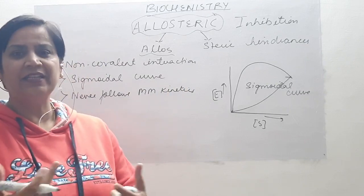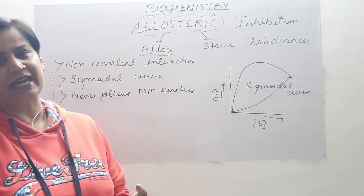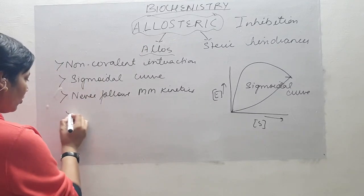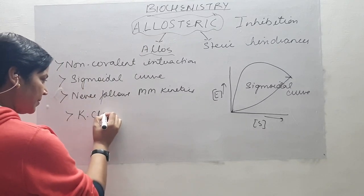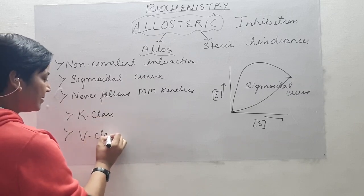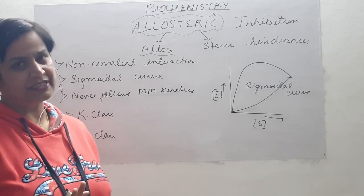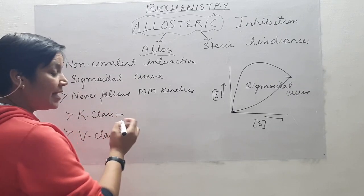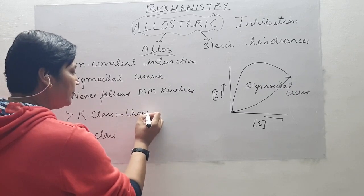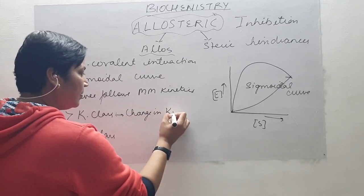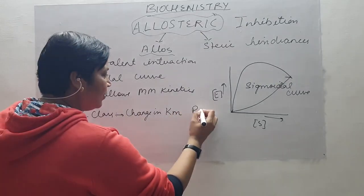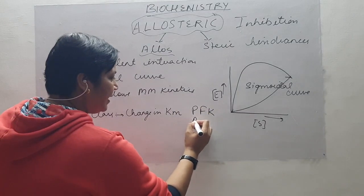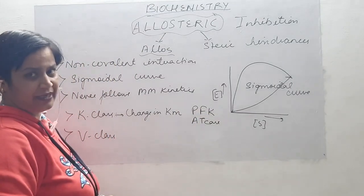Since there has to be a kinetics, some scientists divided allosteric inhibition into two classes: K class enzymes and V class enzymes, which are different from the Michaelis-Menten equation. As the word suggests, in K class there will be a change in KM. An example of K class is phosphofructokinase and ATCase (aspartate transcarbamylase).